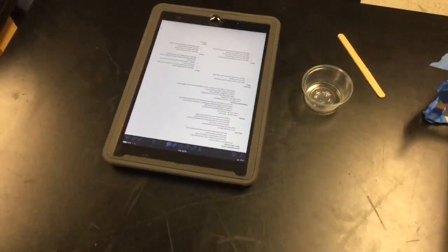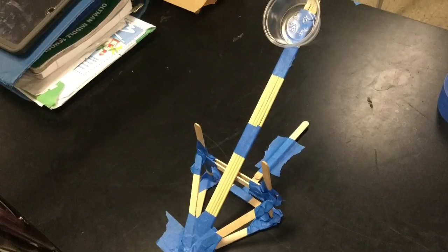After that, we added another support beam to the back to hook our rubber band around and balance out all the weight. Finally, we taped the shaft of the catapult to the base and got our final product.